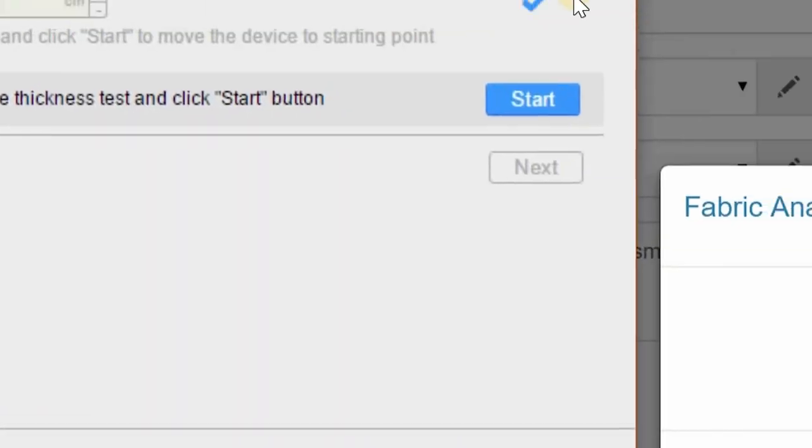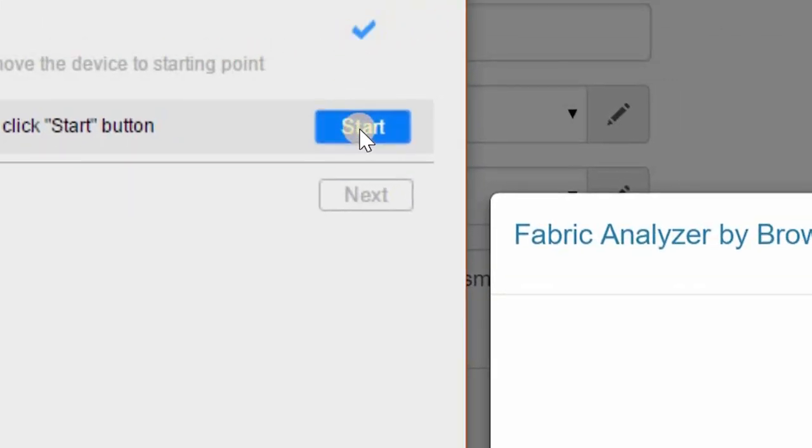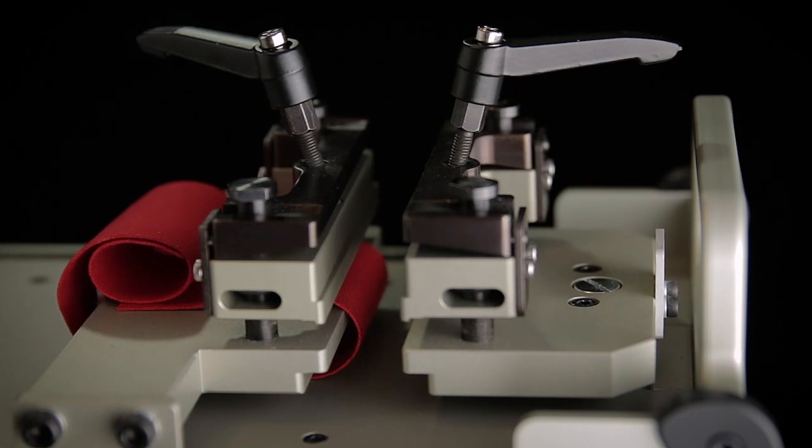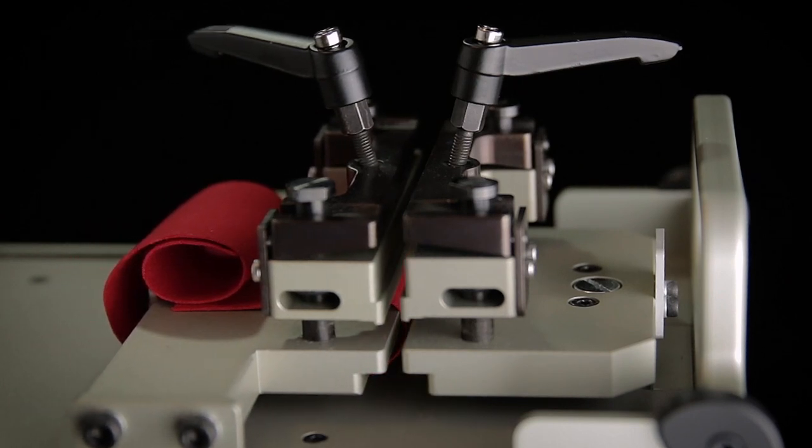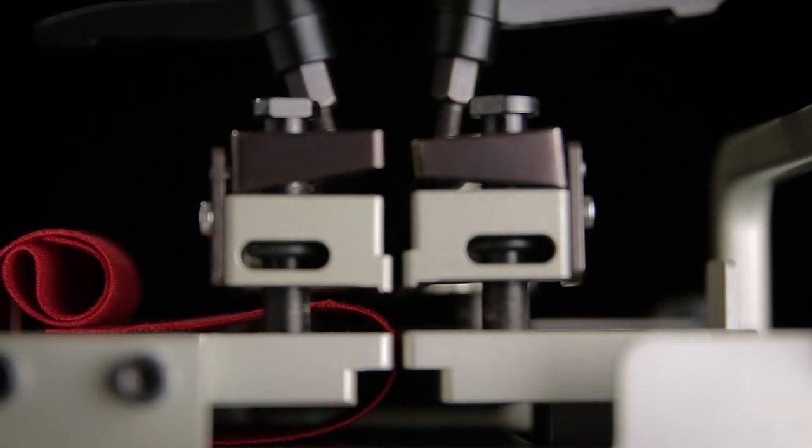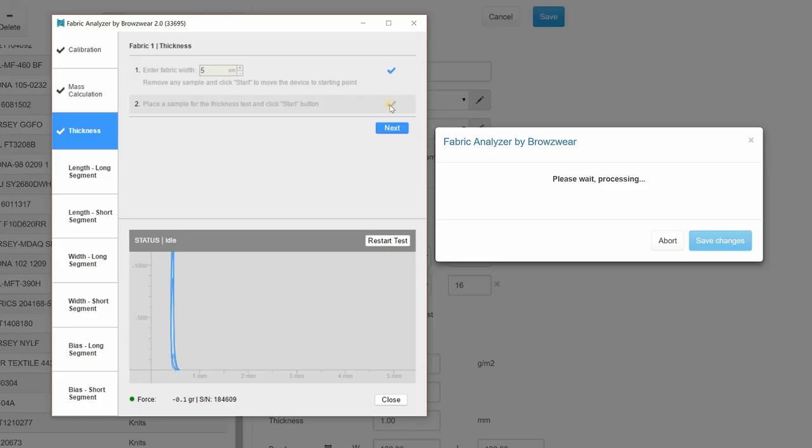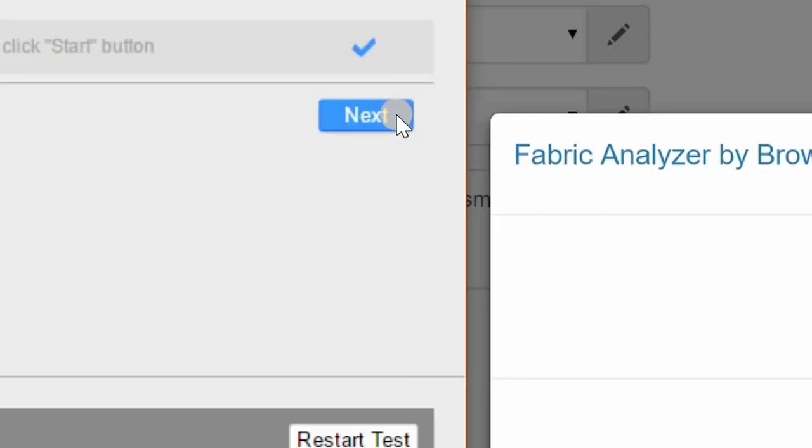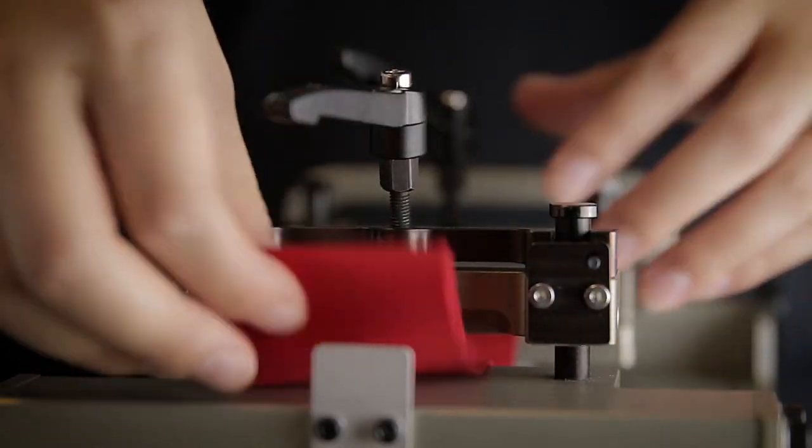Begin the thickness test by pressing Start. The fixed and movable arms will press the sample fabric to measure the thickness. You will know the process has completed when the next button appears on your screen. Remove the sample fabric.